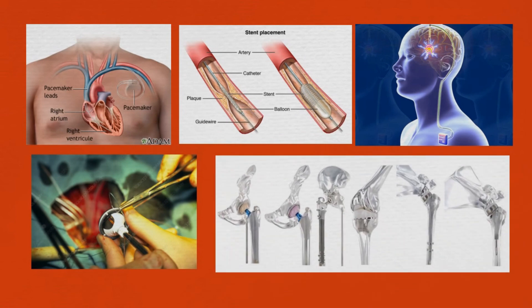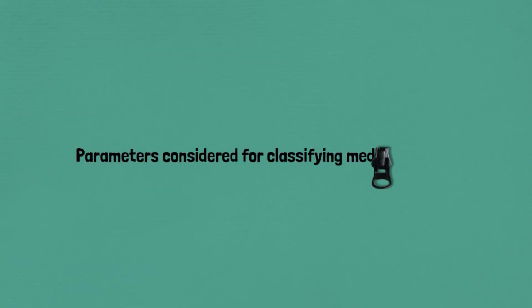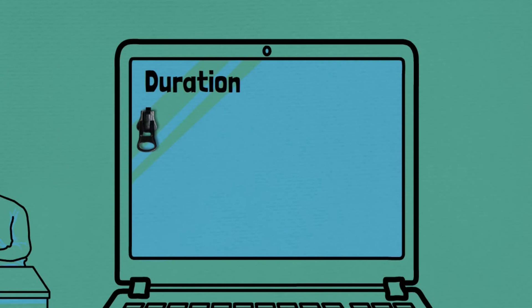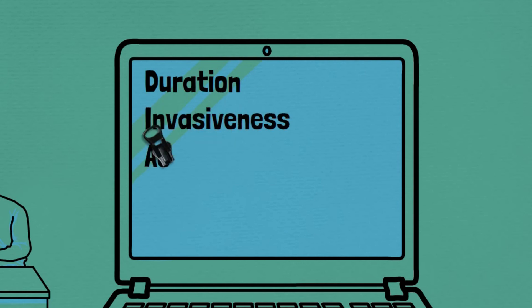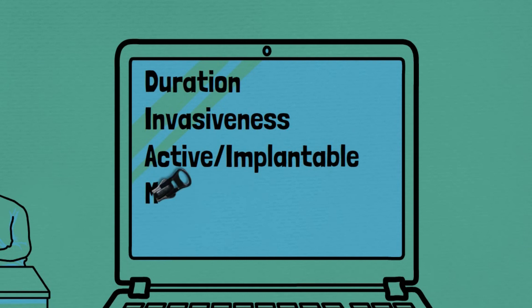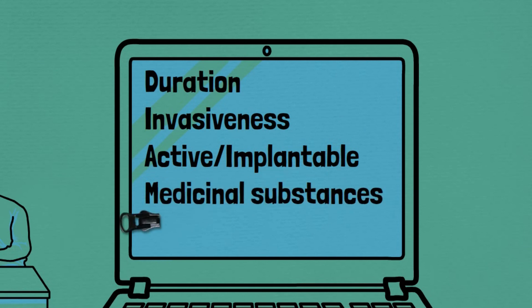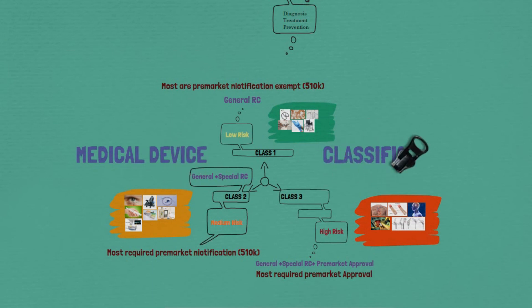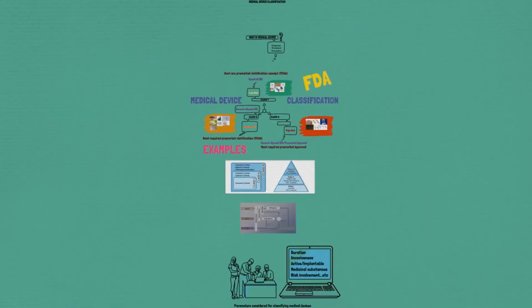Some of the parameters considered for classifying medical devices are: duration — the length of time the device is used in the patient; invasiveness — whether the device is invasive or not; criticality — whether the device is active or implantable. Active devices require an external source of power to operate. Additional parameters include whether the medical device contains medicinal substances, and the risk involvement during operation.